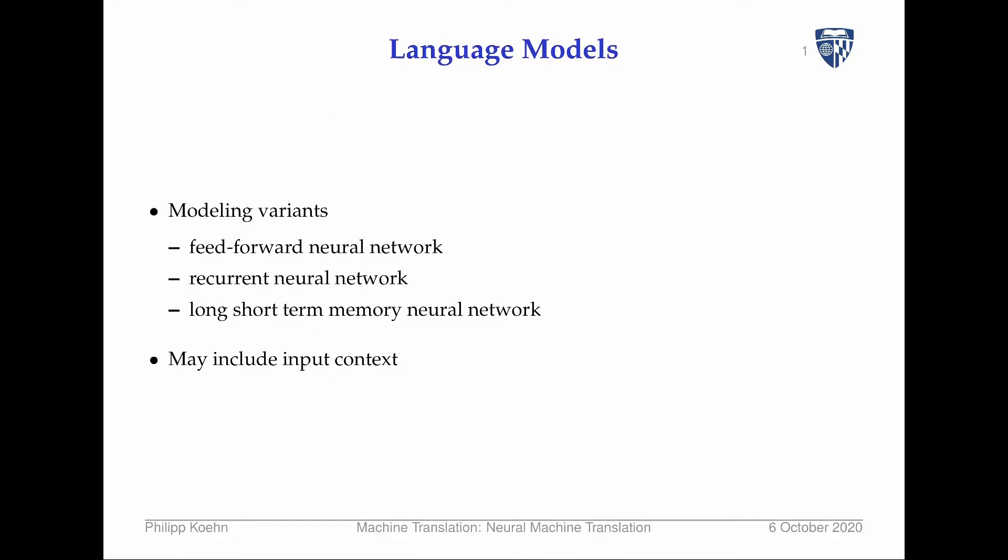If you remember last time we talked about language models in a neural context, we looked at various model variants: feedforward neural networks applied to words as input and words as output, then recurrent neural networks, and a refinement called long short-term memory neural networks.